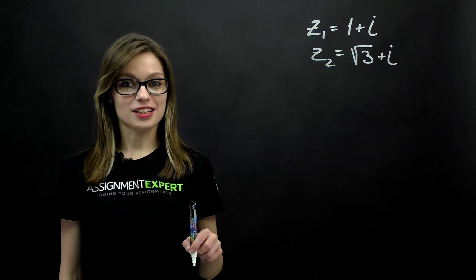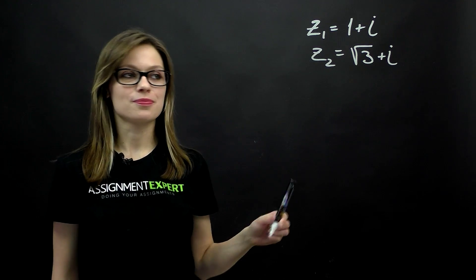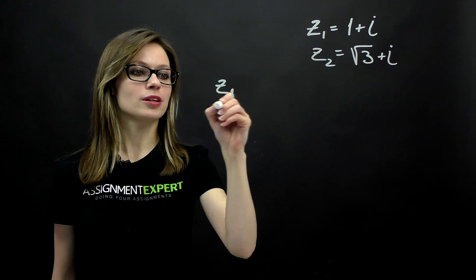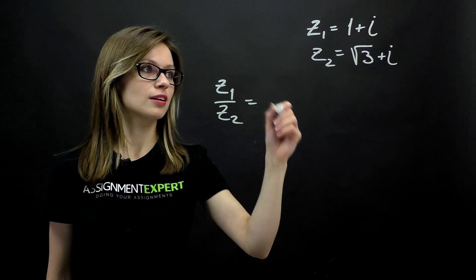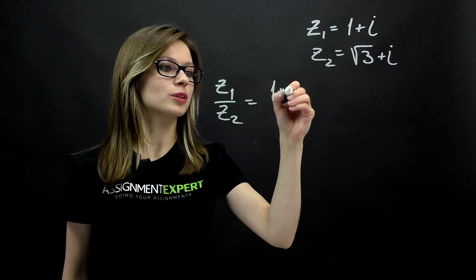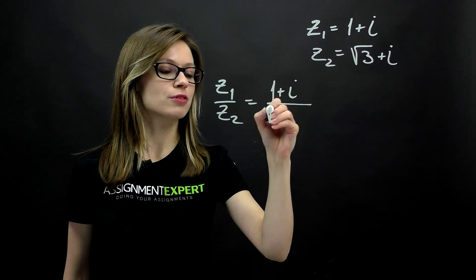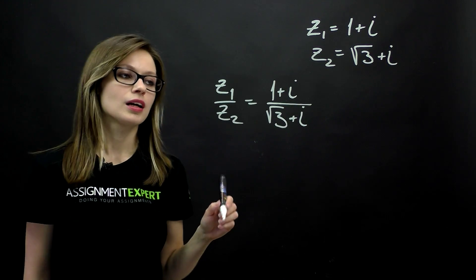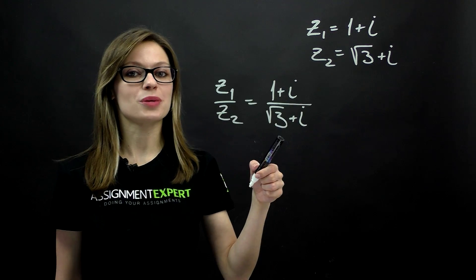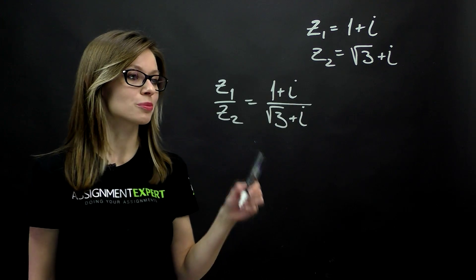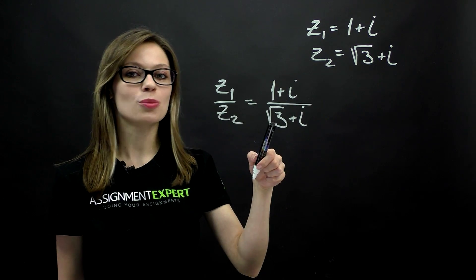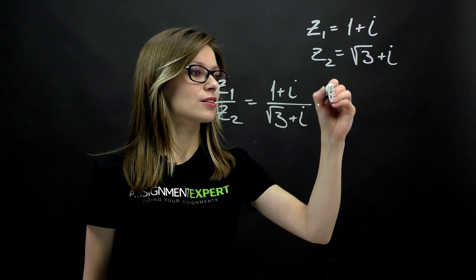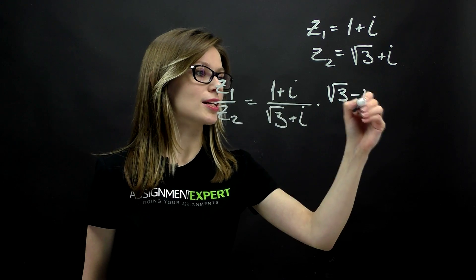The second part of our task is to divide these two numbers, so we'll have z1 over z2, that is 1 plus i over square root of 3 plus i. In order to separate the real and imaginary parts of this fraction, we should multiply its numerator and denominator by the complex conjugate of its denominator, and that is square root of 3 minus i.